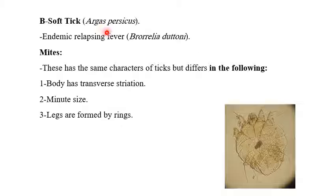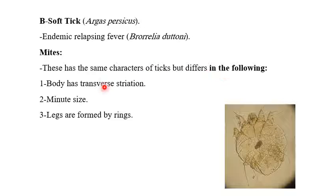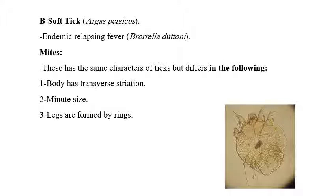Soft tick — Argus (Ornithodoros) species — causes endemic relapsing fever by Borrelia. Mites have the same characteristics as ticks but differ in the following: body has transverse striation, minute size, and legs are formed by rings.